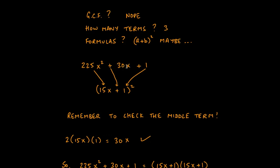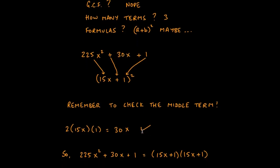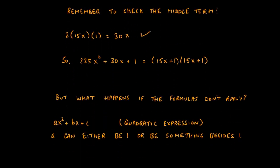Now we have to check the middle term by finding 2ab. The 2ab from our guess needs to match the 2ab in the problem. If it does, we have our answer; if it doesn't, this approach doesn't work and we try something else. So 2 × a × b gives us 30x, and that's indeed what we have in the question. So 225x² + 30x + 1 factors to (15x + 1)(15x + 1).